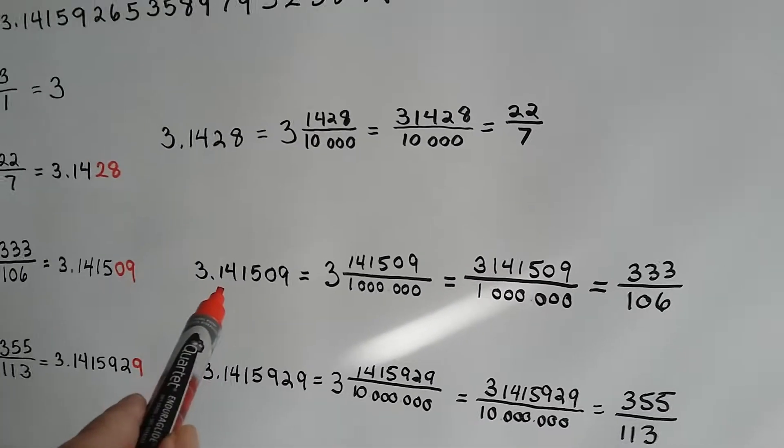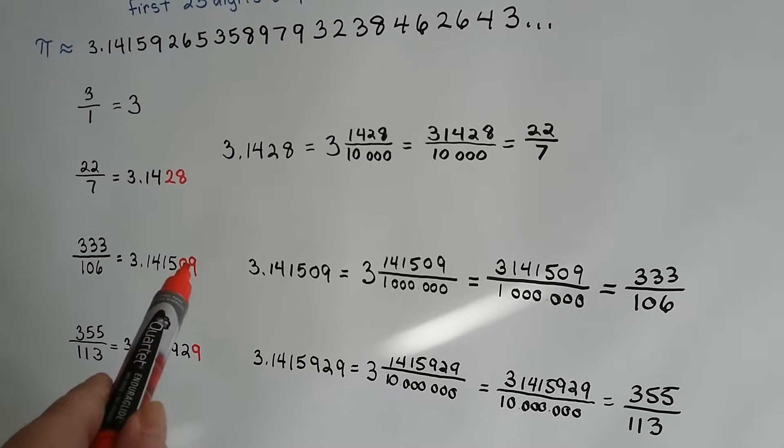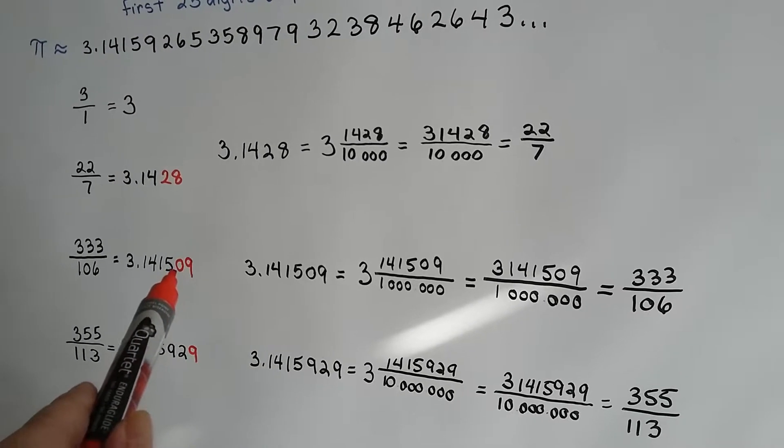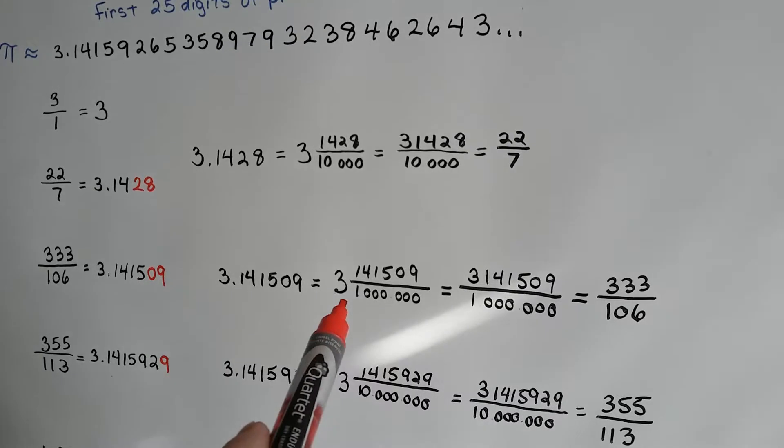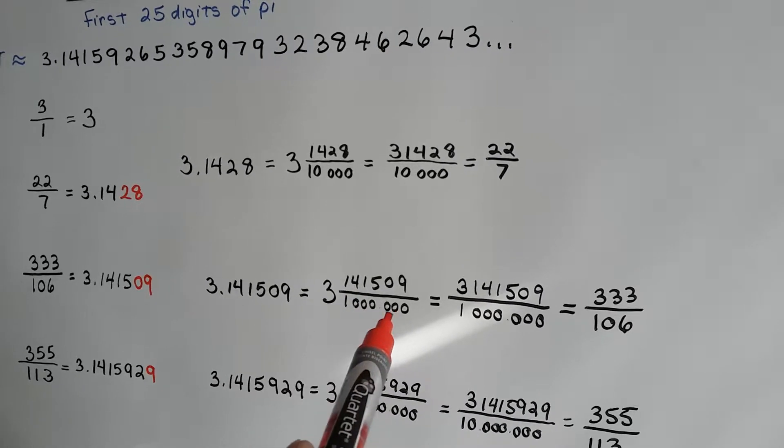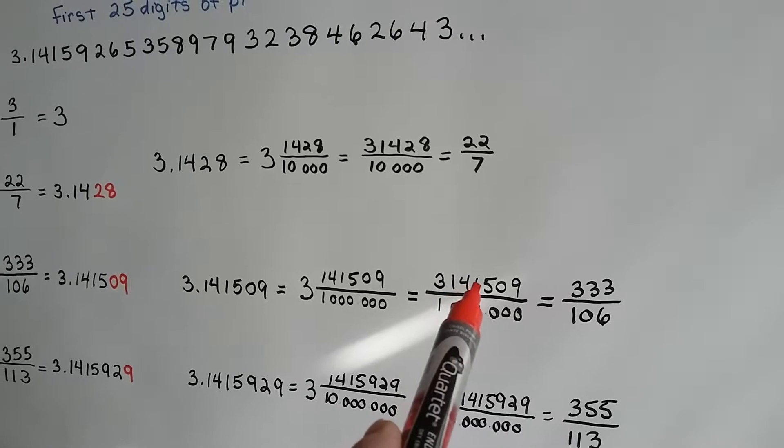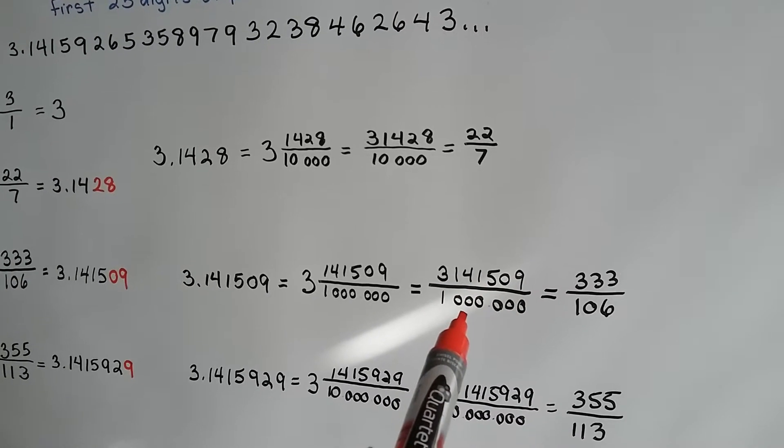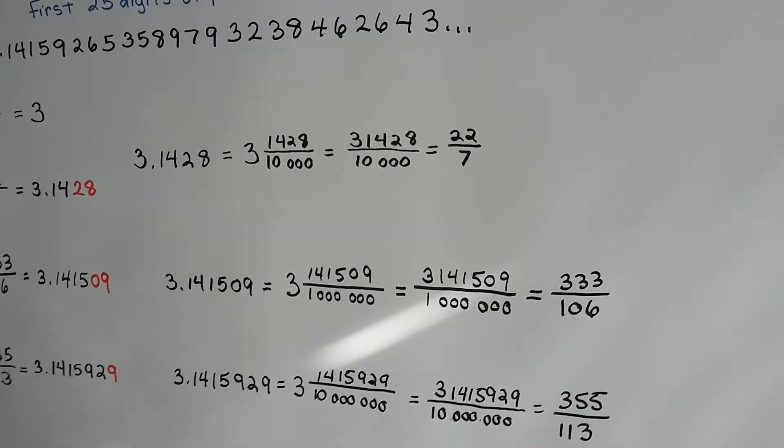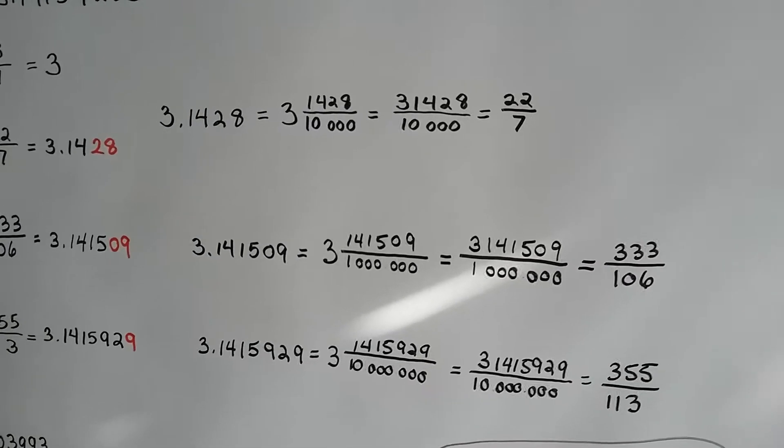If we wrote it out as a fraction from this decimal, which is not the absolute correct pi decimal, it would be over a million. Then, we'd have 3,141,509 millionths. And, it would simplify to the 333 over 106.